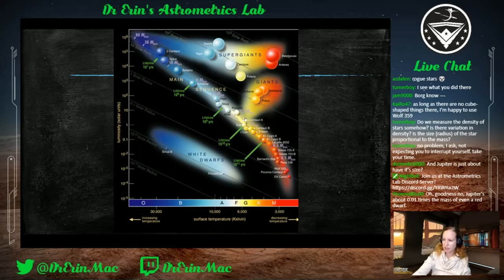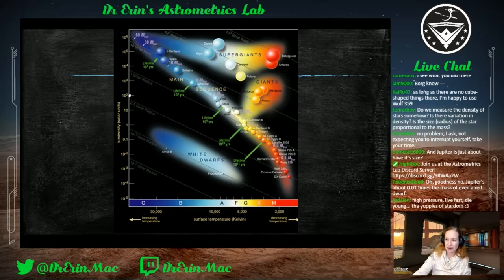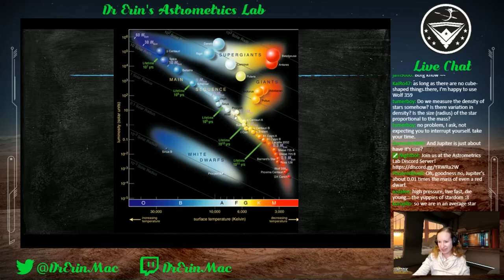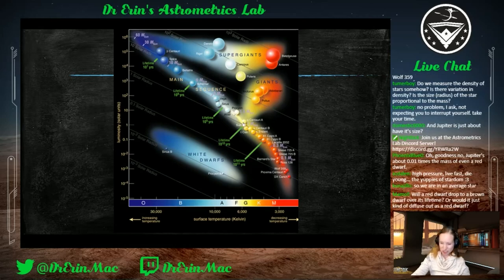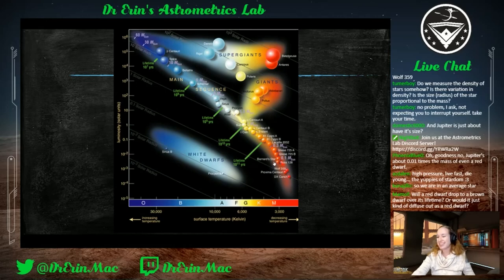If you look at how long it took life to evolve here on Earth, there's not a lot of time for very high-mass stars to support something like that. We're looking at 10 million years for high-mass stars versus 10 billion years for our Sun. Our Sun is incredibly average, which is probably why we're here — it lives for a decent amount of time and gives off a decent amount of radiation. It's kind of the perfect scenario for civilizations like us to survive.